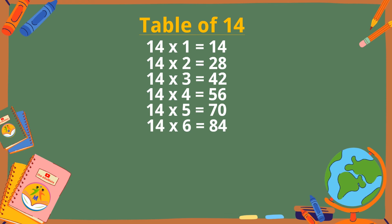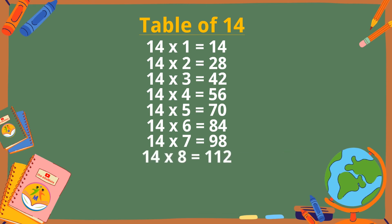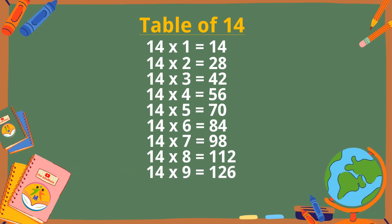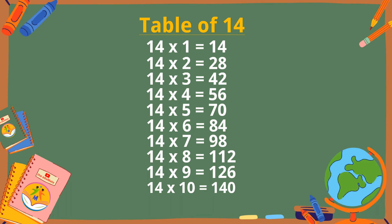14 sixes are 84. 14 sevens are 98. 14 eights are 112. 14 nines are 126. 14 tens are 140.